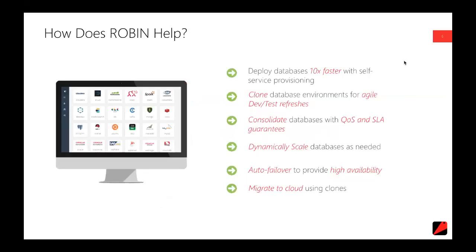So how can Robin help? Robin essentially provides a software-defined application orchestration framework — a unified platform that provides really everything in a single stack. It uniquely provides the ability to empower users with their own self-service rapid provisioning capability. Deploying things like Oracle database homes and databases as much as an order of magnitude faster than is otherwise available.